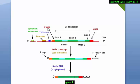Here is the 5' UTR and the 3' UTR. UTR stands for untranslated region — there is a 5' UTR on one end and a 3' UTR on the other end of the mRNA.